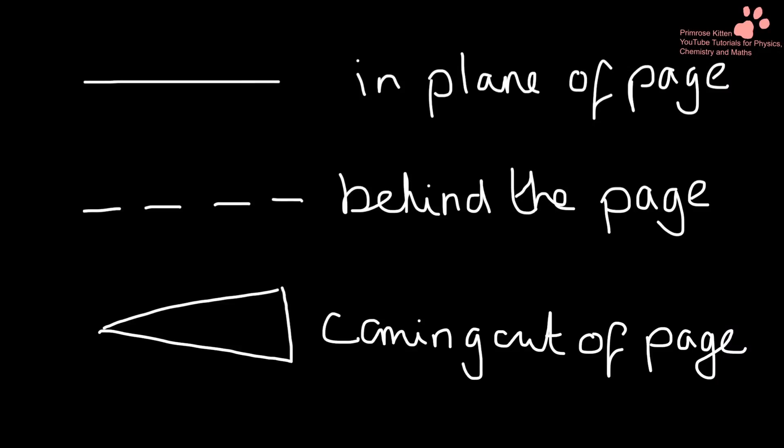There are three notations you need to know for this. A straight line is in the plane of the page, a dashed line is behind the page, and then a wedge is coming out of the page towards you.